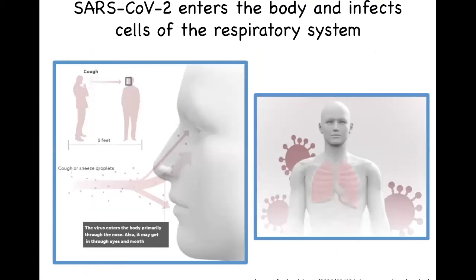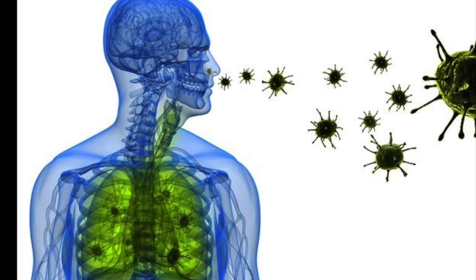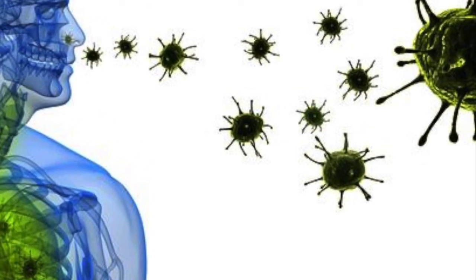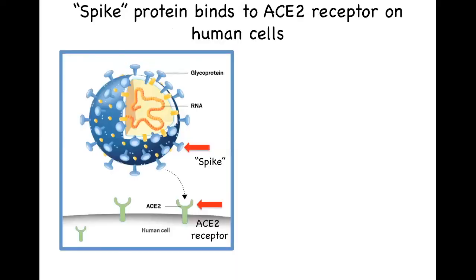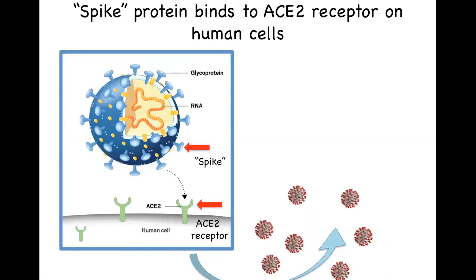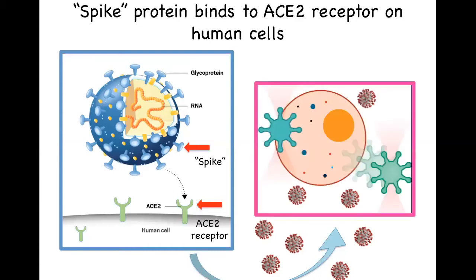SARS-CoV-2 enters our body through our nose and mouth, and probably also through our eyes. Once in our body, it travels to our respiratory system where it infects the cells lining the lungs. Once the cells are infected, they produce many viral particles that can be expelled from the body when the patient coughs or sneezes. On the surface of the virus there is a protein called the spike protein that is capable of binding to the ACE2 receptor on the surface of the lung cells. The binding of these two proteins works like a lock and key and allows the virus to enter our cells. Once inside the cell, the virus gets replicated and creates many copies of itself that are released from those cells in order to infect neighboring cells. At that point, our immune system is going to be interacting with all those particles.